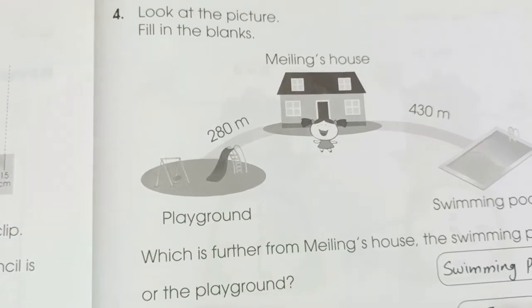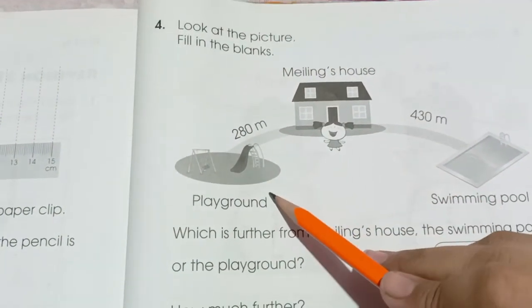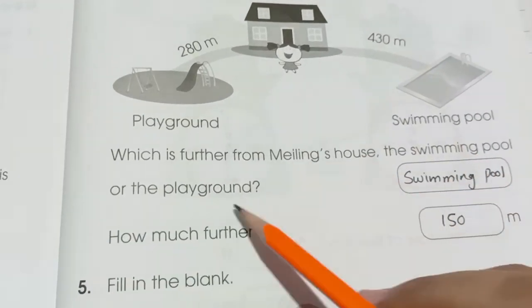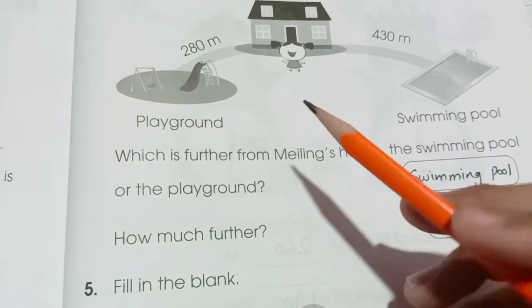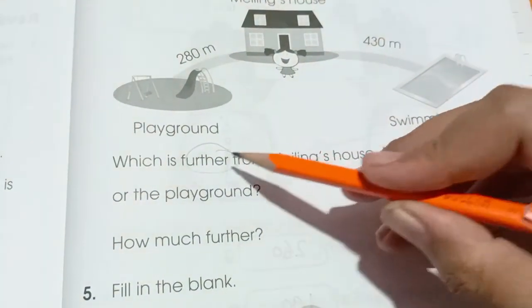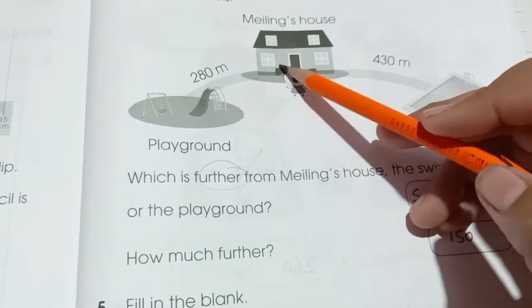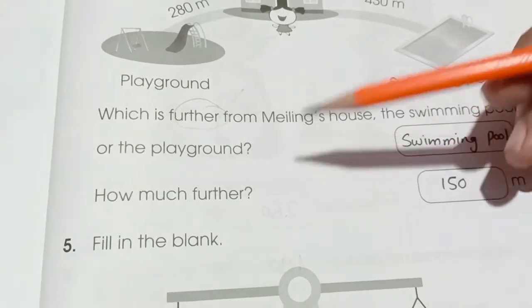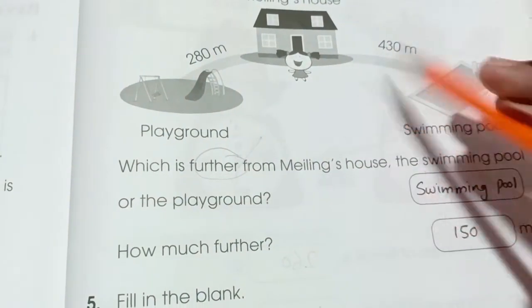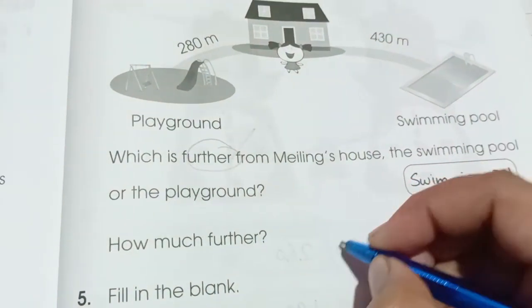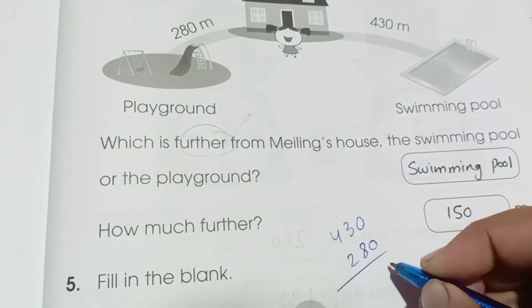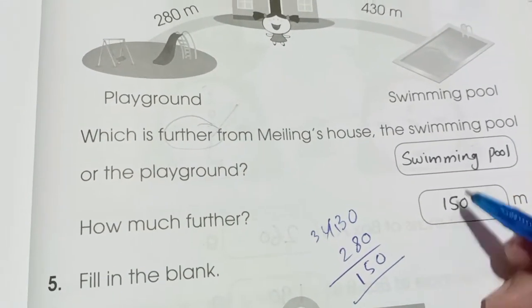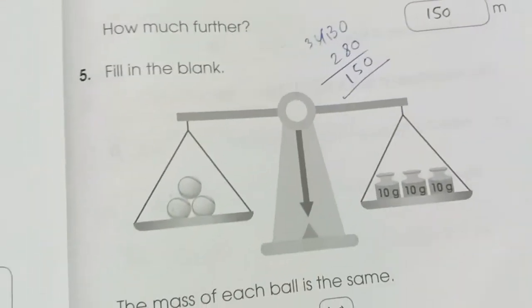Question number 4, page number 201. Here we have a picture. Playground, milling house and swimming pool. Which is further from milling house, the swimming pool or the playground? This means far, long distance. So we can see 280 meters the distance of playground and 430 meters the distance of swimming pool. So swimming pool is further. How much further? So we have to find the distance between 430 to 280.